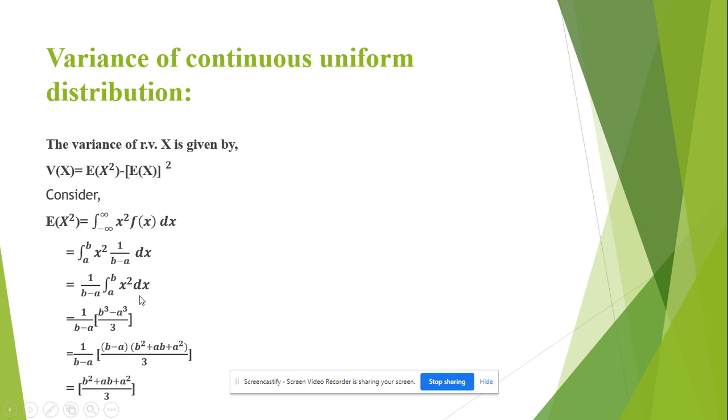After substituting the values in the integration we get 1 by b minus a times b³ minus a³ by 3. Factorize the term b³ minus a³ which comes out to be b minus a times b² plus ab plus a² by 3. b minus a terms get cancelled and the expected value of X square comes out to be a² plus ab plus b² by 3.